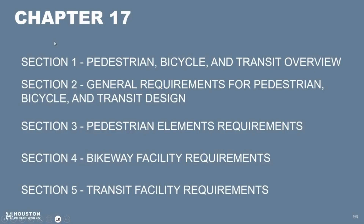Chapter 17 is slightly restructured and broken into five sections: an overview section, Section 2 with general requirements covering everything, Section 3 focused on pedestrians, Section 4 on bikeways, and Section 5 on transit. The city is not the transit agency — Metro has their own design guidelines — but this chapter focuses on requirements for transit facilities in the city's right-of-way.